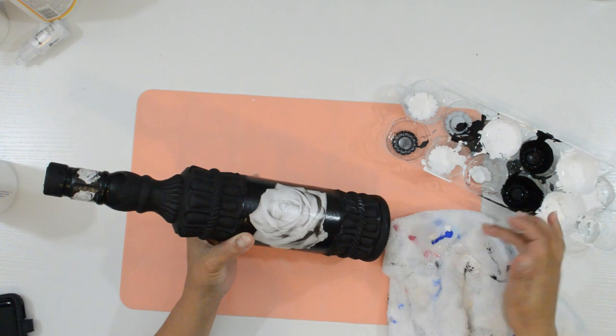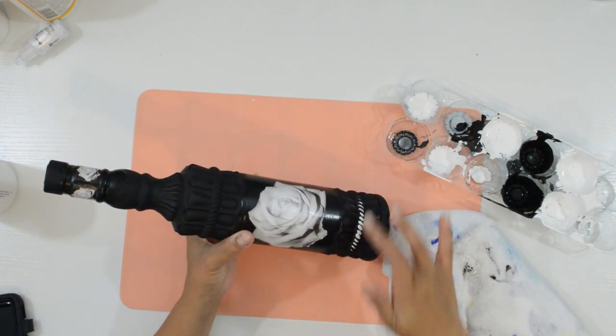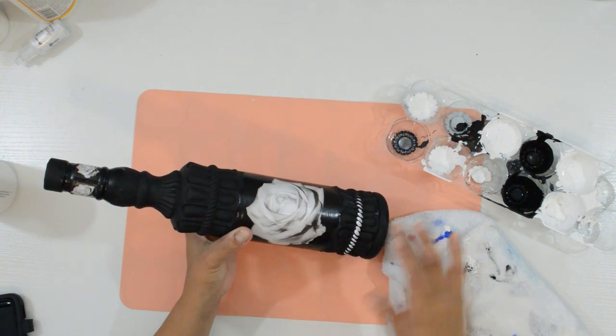That's it for the decoupage part. I'm going to add highlights to the raised parts to finish the look. I do this by gently adding white paint with my finger.